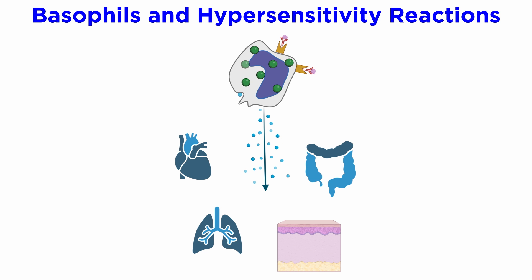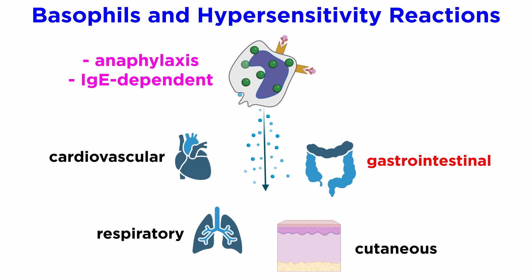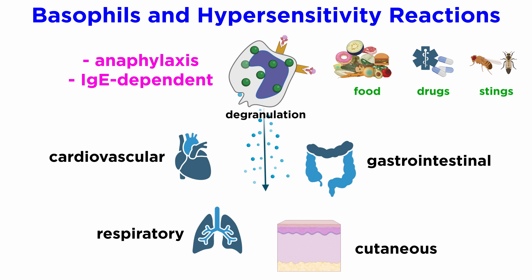Similar to mast cells, basophils are main participants in immediate hypersensitivity reactions such as anaphylaxis. This is IgE-dependent and appears as cardiovascular, cutaneous, respiratory, and gastrointestinal events, consequent to basophil and mast cell degranulation. The most commonly defined causes are allergy to foods, drugs, and insect stings or bites.